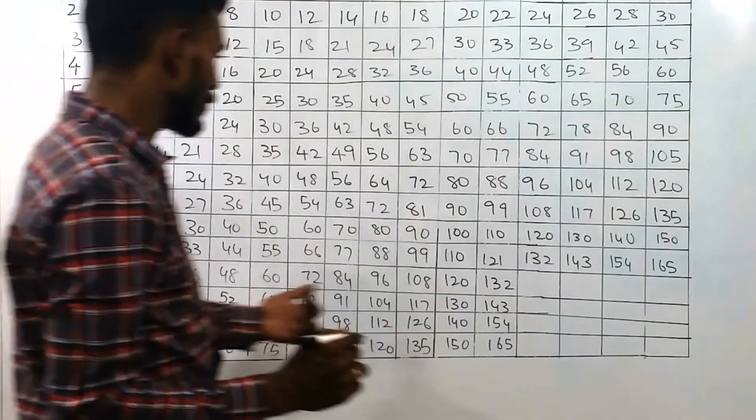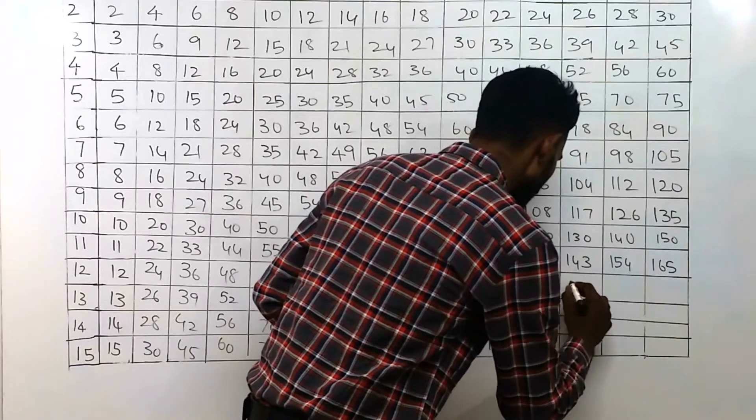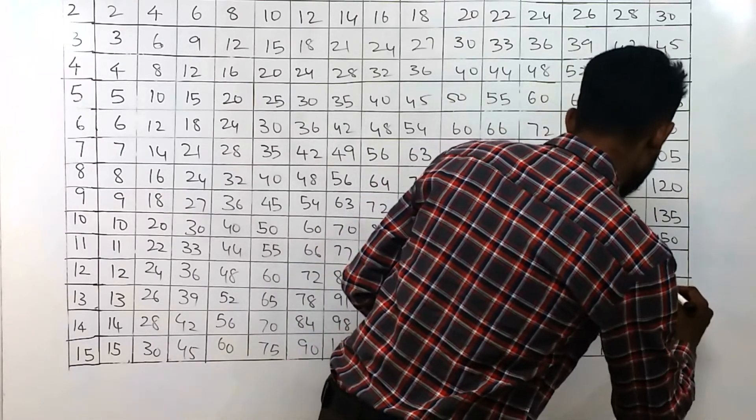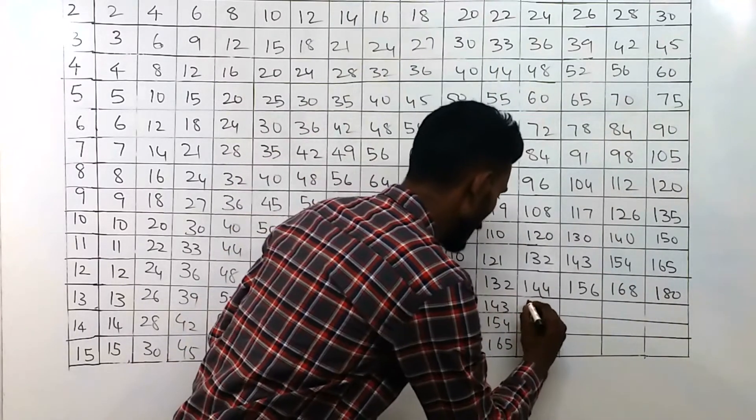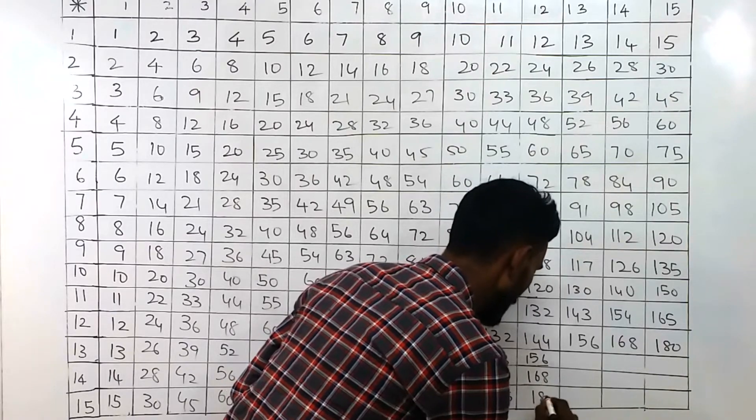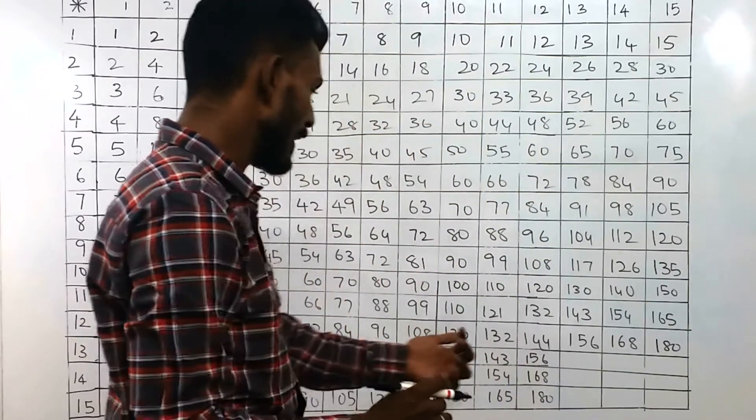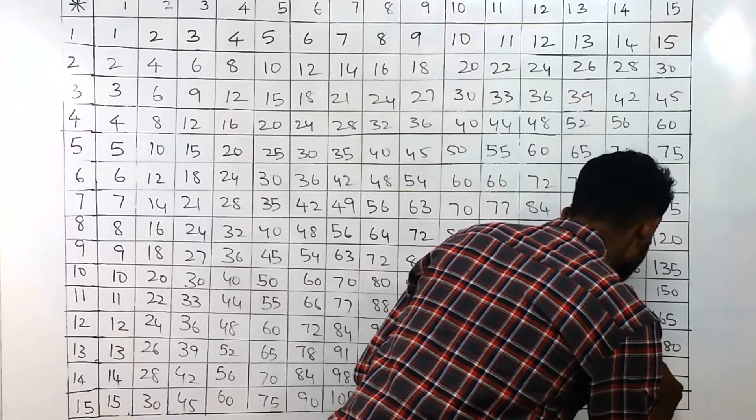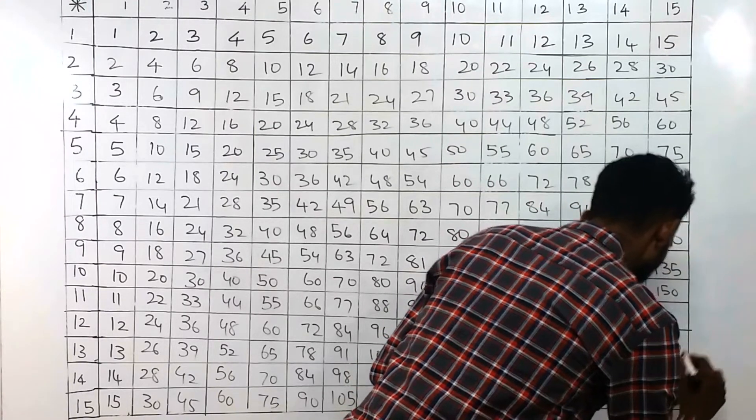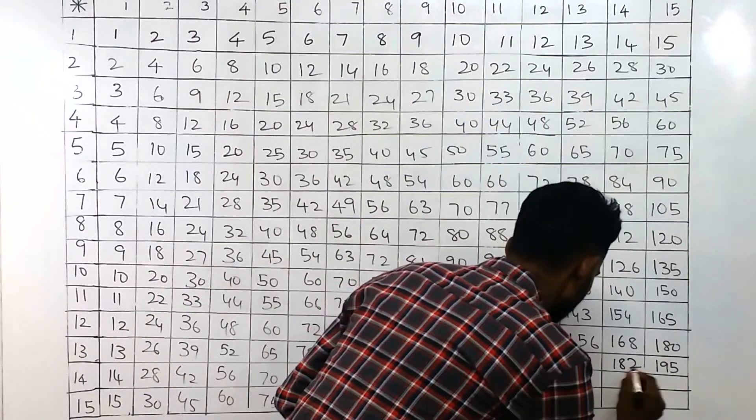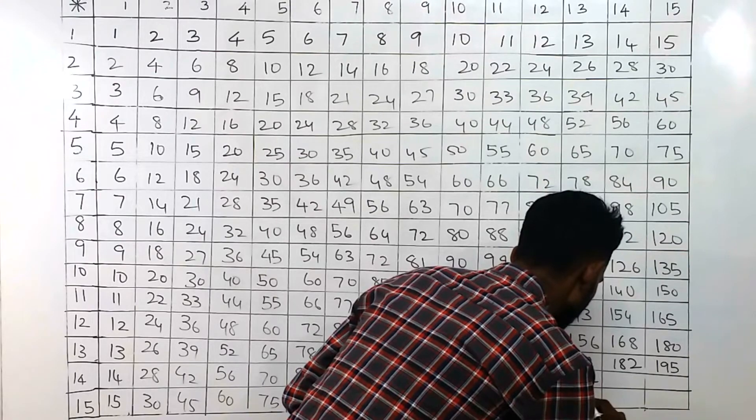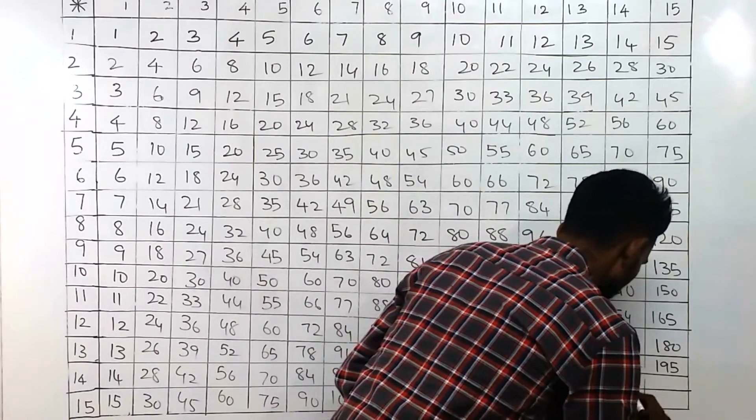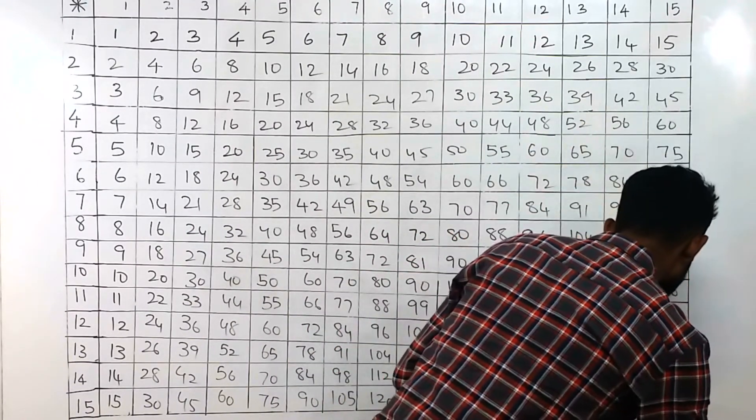Then in the 12th row, we have to add 12 to every number. That is 144, 156, 168, and 180. Then in the 13th row, we have to add 13 to every number. That is 169, 182, and 195. In the 14th row, add 14 to every number. That is 196. Then add 14. That is 210.